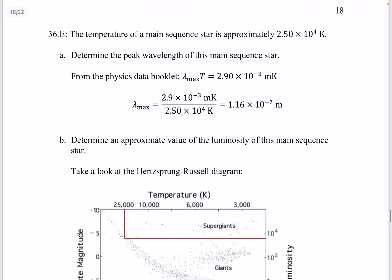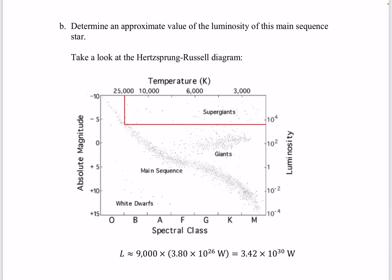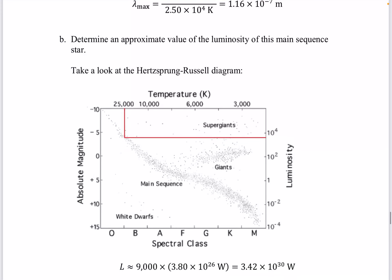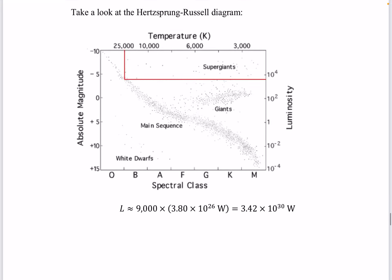Question 36. The temperature of a main sequence star is about 2.5 times 10 to the 4 Kelvin. Part a. Determine the peak wavelength of this main sequence star. So we're going to use the equation lambda max t equals 2.9 times 10 to the minus 3 meters Kelvin and solve for lambda. Part b. Determine an approximate value of the luminosity of this main sequence star. So we got to take a look at this graph. And luminosity here. Remember, we were given that the temperature is 25,000 Kelvin. So the luminosity here is about 9,000. And this is the solution we get.